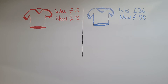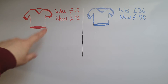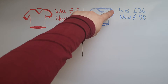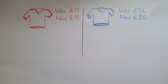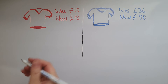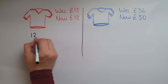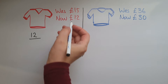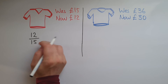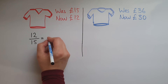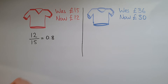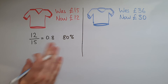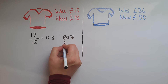Now we've got two shirts: the red shirt and the blue shirt. There is a discount in their prices. The red shirt was 15 pounds and it's now 12 pounds. The blue shirt was 36 pounds and it is now 30 pounds. Which one has the highest discount? So we'll go 12 out of 15, which gives us 0.8, so that is 80%, meaning that there's been a 20% discount.